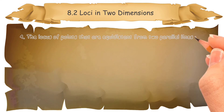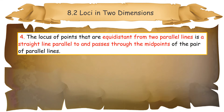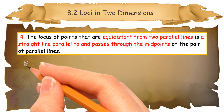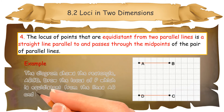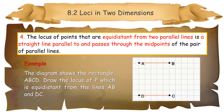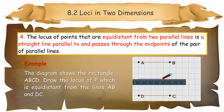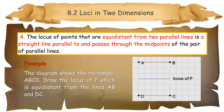Four: the locus of points that are equidistant from two parallel lines is a straight line parallel to and passing through the midpoints of the pair of parallel lines. Example: the diagram shows the rectangle ABCD. Draw the locus of P which is equidistant from the lines AB and DC. Solution: the locus of point P that is equidistant from lines AB and DC is a line parallel to AB and DC, and is 3 units from lines AB and DC.